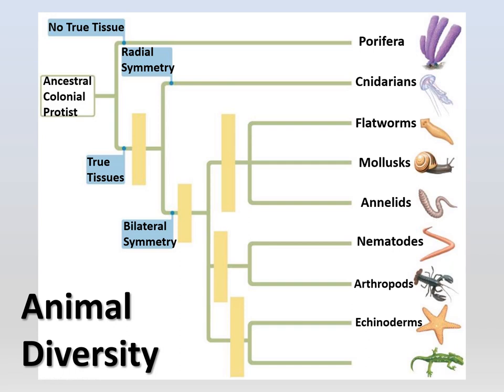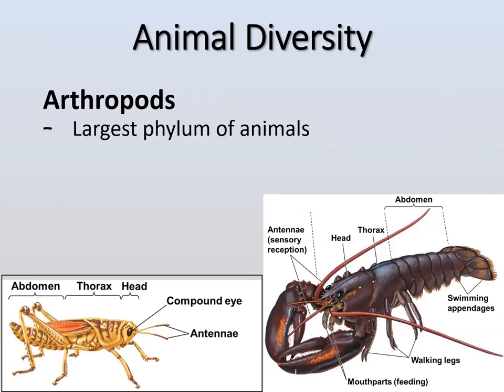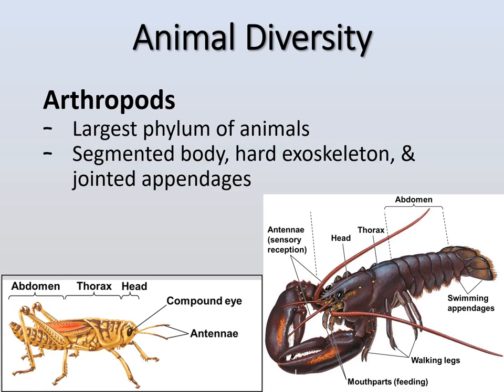Now we're continuing with arthropods, one of the biggest groups in the animal kingdom, then echinoderms — our starfish or sea stars — and then chordates, which includes us. Arthropods are the largest phylum of animals. All of these guys have segmented bodies, a very hard exoskeleton, and jointed appendages — you can see the little joints in their legs and limbs.